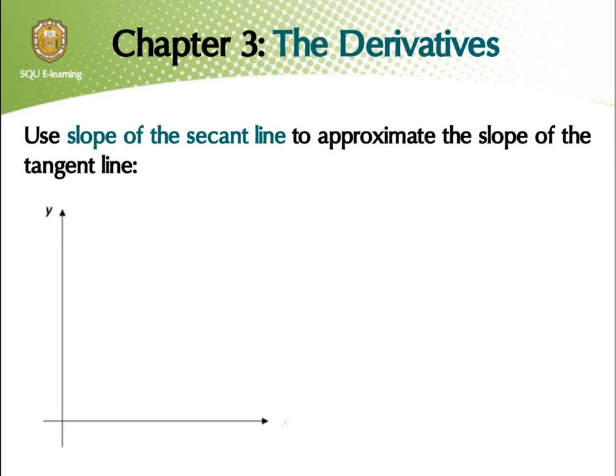As it's evident from the animation that you are seeing, if you want to approximate the slope of the tangent line to the curve y is equal to f of x at the point (a, f of a), then we look for another point in the curve with x coordinate close to the number a. This point is (a plus h, f of a plus h), where the absolute value of h is going to be a small real number. The line connected between the two points (a, f of a) and (a plus h, f of a plus h) is called the secant line.